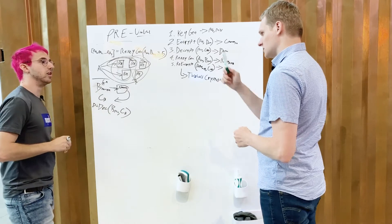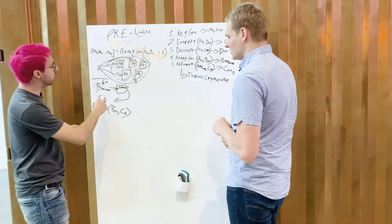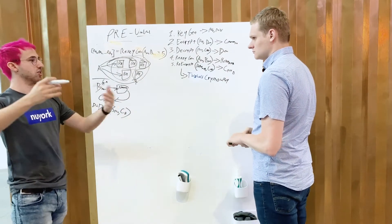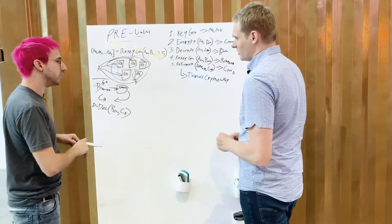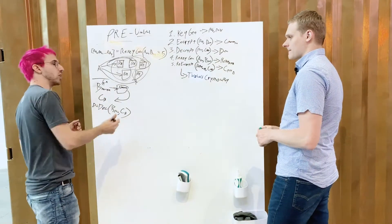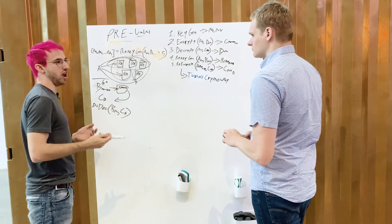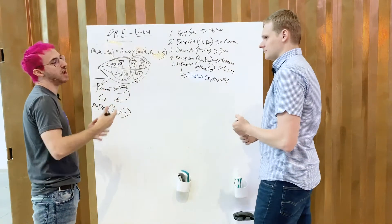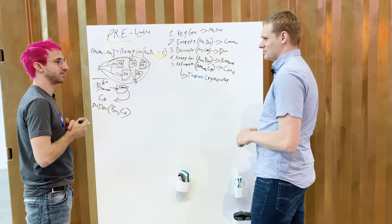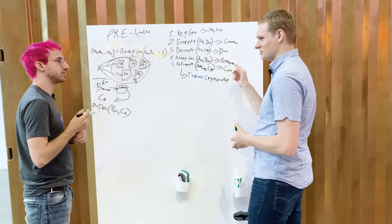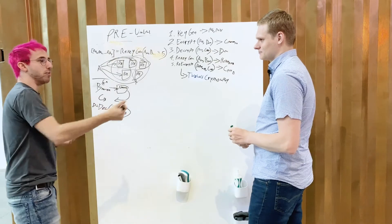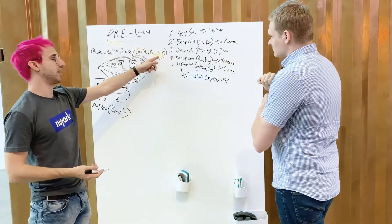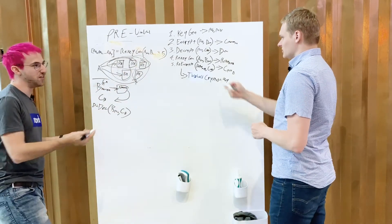It's recorded on Ethereum who holds the parts, and Bob knows which nodes have the fragments via what we call a treasure map in our codebase, along with a learning loop to discover the network. The treasure map is usually encrypted directly for Bob. As for bribing nodes: as the threshold increases, it becomes much more difficult — you'd be paying 90 ETH just for a re-encryption key that you still can't do anything with alone.